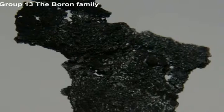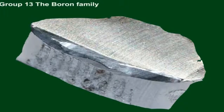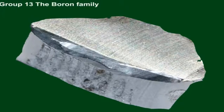Boron is a relatively rare element, accounting for only about 0.001% of the Earth's crust by mass. Aluminium is the most important of the Group 13 elements. Gallium is remarkable for its unusually low melting point of 29.7 degrees Celsius.